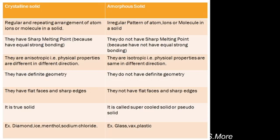Crystalline solids have sharp melting and boiling points because there is a strong intermolecular force of attraction, that is bonding between the constituent particles. But in amorphous solids, the melting and boiling point is not sharp because equal binding is not present.